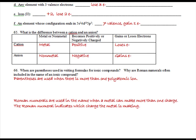All right, number 66. Number 66 is asking us about parentheses. It says, when are parentheses used in writing formulas for ionic compounds? And then why are Roman numerals used? Let's tackle both of these. Parentheses are used when there's more than one polyatomic ion.